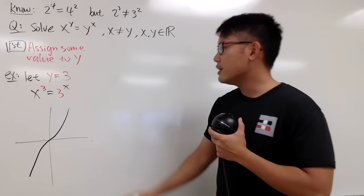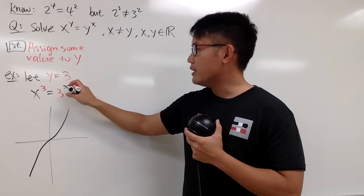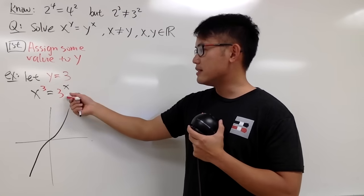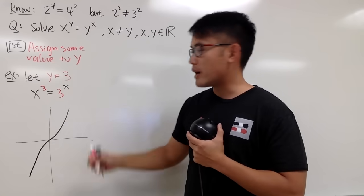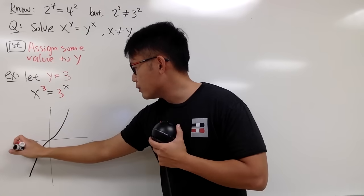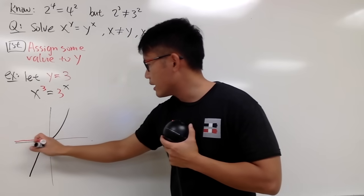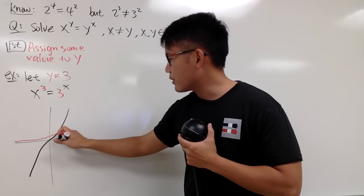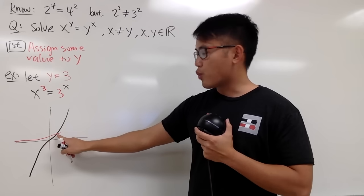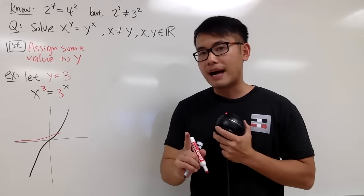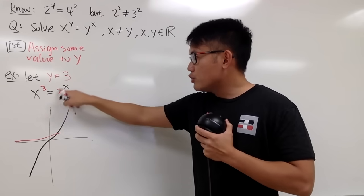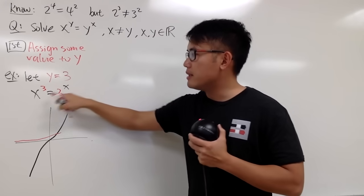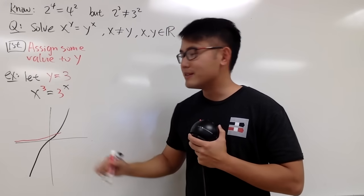And secondly, you graph 3 to the x power, and notice that this is an exponential growth function, right? So the graph is going to look like this, and you can verify this on your own. And first, it's going to cross it right here. But notice that exponential function, this right here, it's going to beat x to the third power somewhere else.